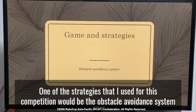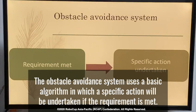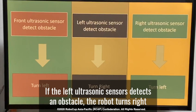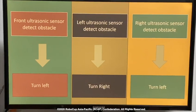Some strategies that I use for these competitions would be the obstacle avoidance system. The obstacle avoidance system uses a basic algorithm — a specific action would be taken with the robot. First of all, if the front ultrasound sensor detects an obstacle, the robot will turn left. If the left ultrasound sensor detects an obstacle, the robot will turn right. And finally, if the right ultrasound sensor detects an obstacle, the robot will turn left.